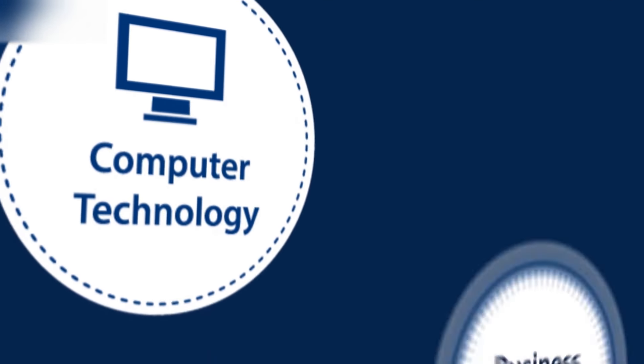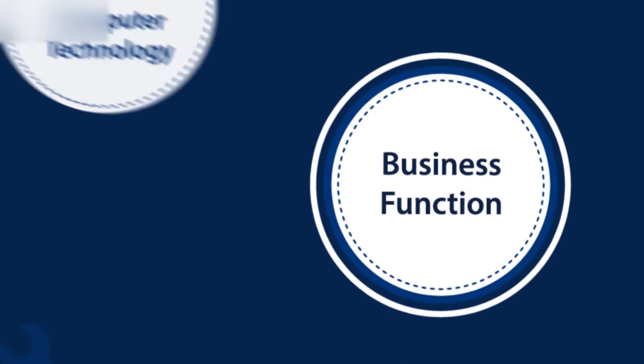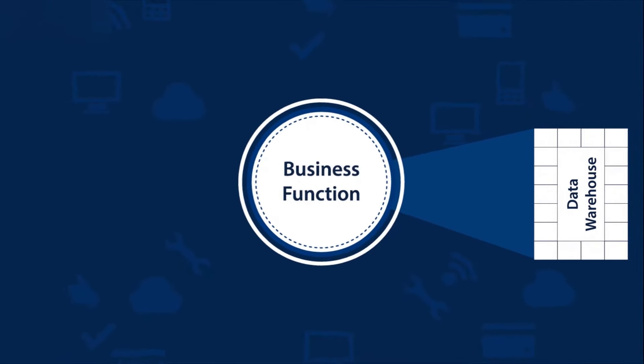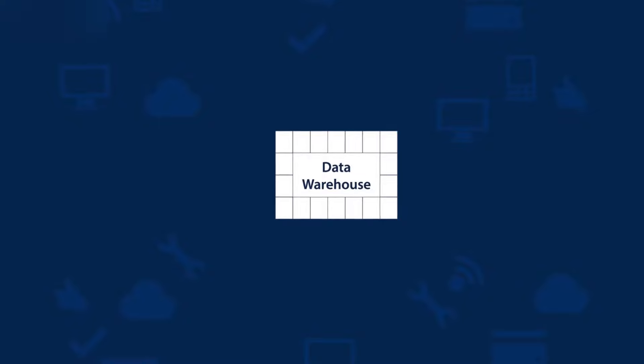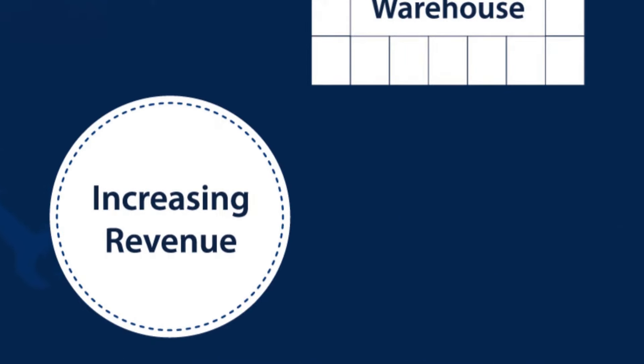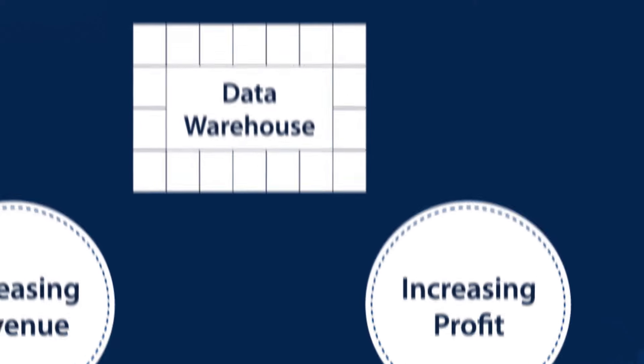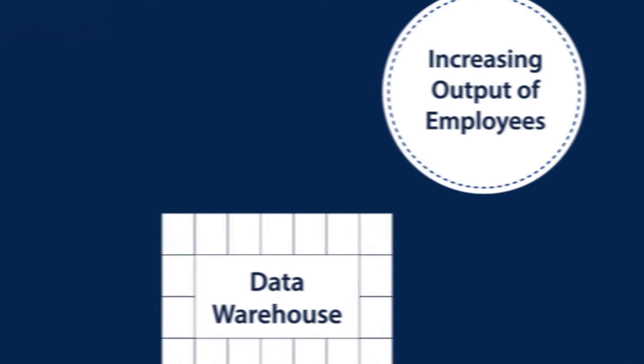So what exactly is MIS? A Master's in Management Information Systems enables you to use computer-related technology in business functions. You would be part of creating a data warehouse that aids efficient business operations. Integrated systems like this can do wonders for any organization in terms of key functionalities like increasing revenue, increasing profits, increasing employee output, and sometimes even decreasing production costs.